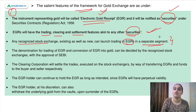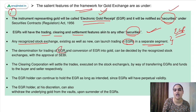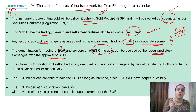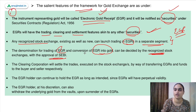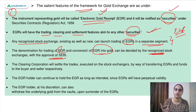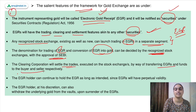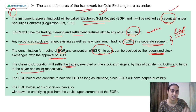The denomination for trading of EGRs and conversion of EGRs into gold will be decided by the stock exchange and approved by SEBI. So how much gold one EGR will represent and the conversion rate must be approved by SEBI. The clearing corporation will settle trades executed on the stock exchange by transferring EGRs and funds to the buyer and seller.